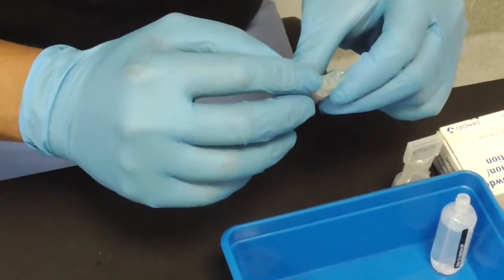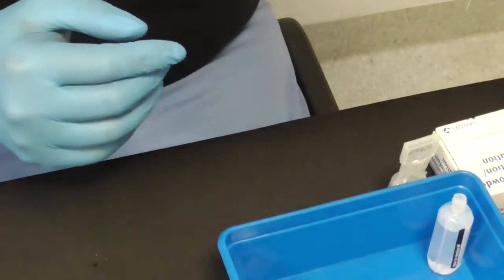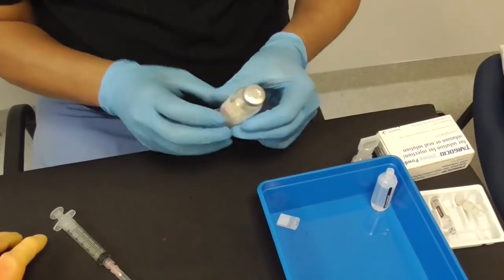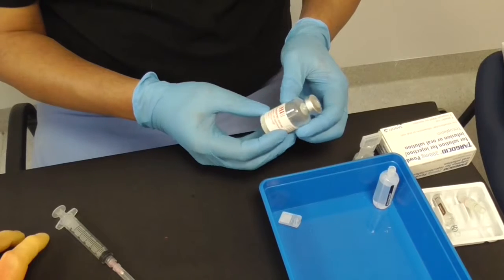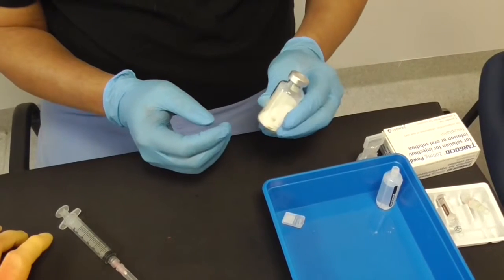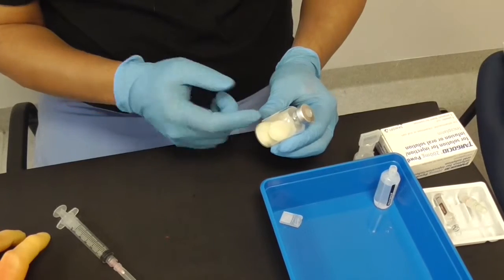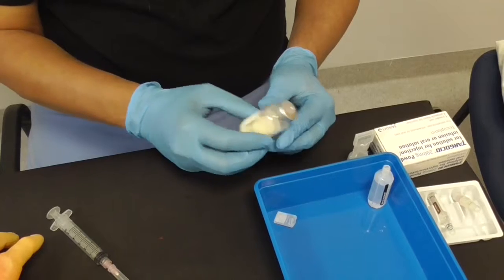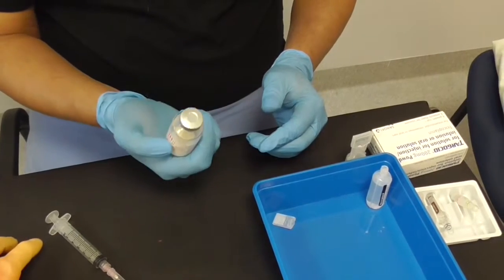And again, this has a snap off the top like the one that I showed you previously. The third type is that you've got a bit of solid, like this is a bit of Targocid, which is an antibiotic. That comes just as a powder form. That powder form, you've got to add a bit of liquid inside it to actually get it to dissolve before you can administer it.